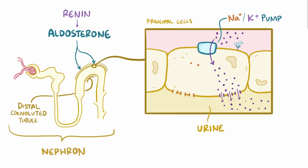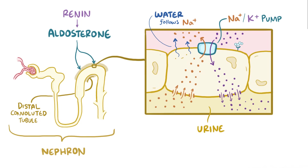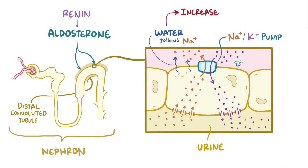At the same time, the pumps drive sodium in the opposite direction, from the cell into the blood, which allows more sodium to flow from the tubule into the cell down its concentration gradient. Since water often flows with sodium through a process of osmosis, water also moves into the blood, which increases blood volume and therefore blood pressure.